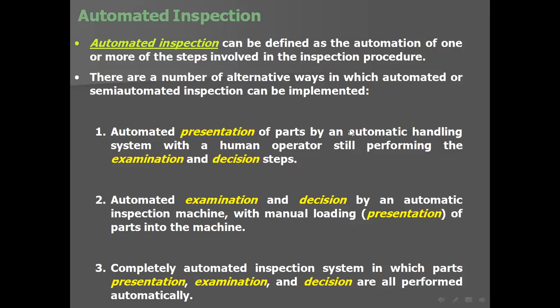Automated inspection can be defined as the automation of one or more of the steps involved in the inspection procedure. There are a number of alternative ways in which automated or semi-automated inspection can be implemented. First: presentation of parts is automated — an automatic handling system brings the part to the worker, while the human operator still performs examination and decision steps, such as checking dimensions, surface quality, painting, or welding quality.